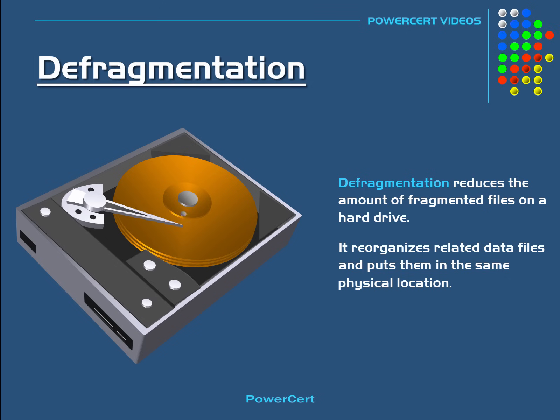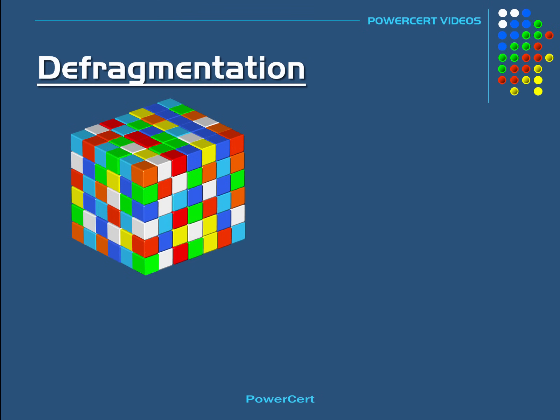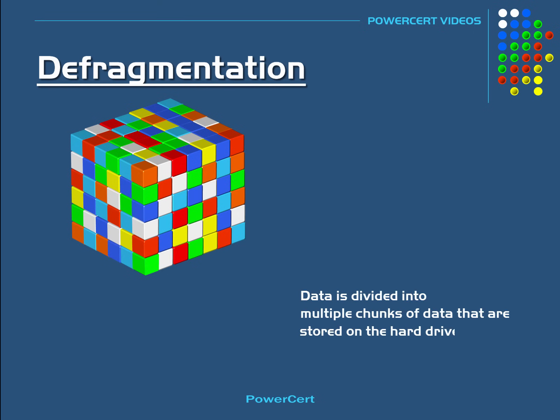For example, as you install data on your hard drive — such as programs, documents, music, video, and so on — that data is actually divided into multiple chunks of data that are stored on the hard drive. So after a while, your hard drive will look something like this: all of your data is spread out and mixed in with other data files.